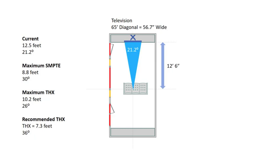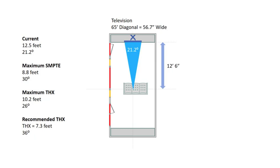THX wants a viewing angle of at least 26 degrees, while SMPTE sets their minimums higher at 30 degrees. In order to comply, the seating position can be moved almost 5 feet closer to a distance of 7.3 feet, achieving the recommended THX 36-degree viewing angle. However, before making this move, I want to consider the impact on speaker placement, and I know that one wall is a challenge.